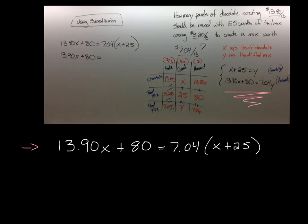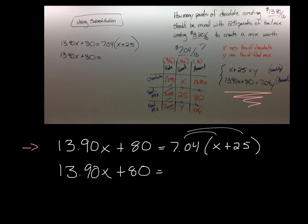The first thing I would do is distribute the 7.04 to the x and the 25. What that would give us here is 13.90x plus 80 equals 7.04x, and then plus 7.04 times 25, which gives us 176.